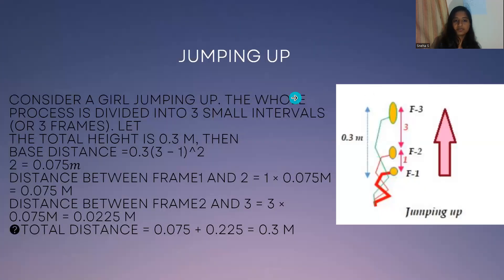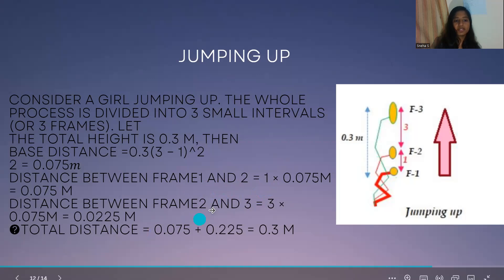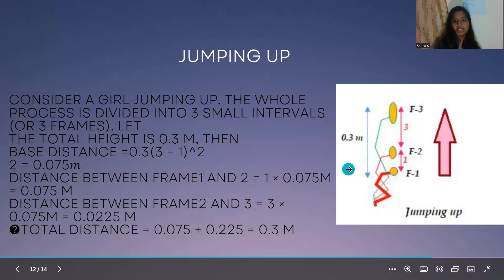Jumping up is a process where we take the sum of all the frames. Here a girl is jumping, and the total process is divided into three intervals: frame 1, frame 2, and frame 3. The total distance is 0.3. We find the base distance using total distance divided by (total frames minus 1) squared, giving 0.075. Taking the distance between frame 1 and frame 2 and multiplying by odd numbers in the starting order, then calculating between frame 2 and frame 3, we get the total sum as 0.3.